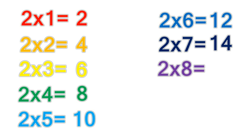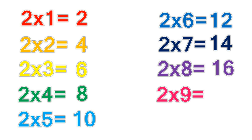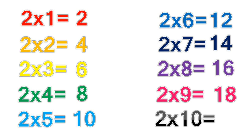2 times 7 equals 14. 2 times 8 equals 16. 2 times 9 equals 18. 2 times 10 equals 20.